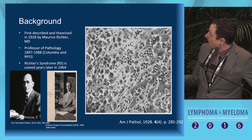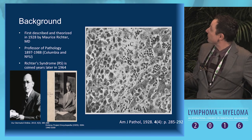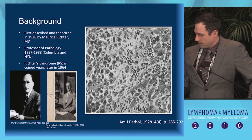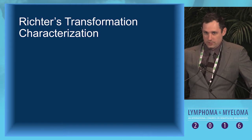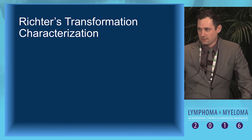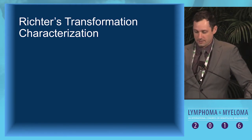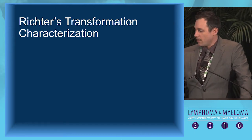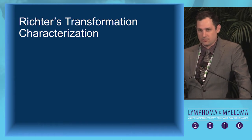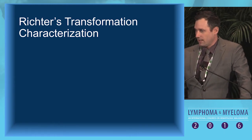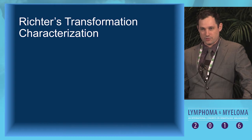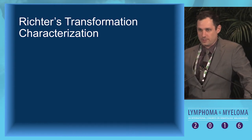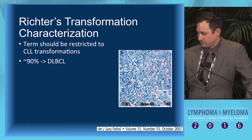You can see sheets of large atypical cells admixed with smaller CLL-like cells. The term Richter's syndrome really should be restricted to CLL when it transforms. While follicular lymphoma and marginal zone lymphomas can also transform, CLL when it transforms does seem to have a truly distinct biological difference in terms of its response rates to induction chemotherapy, so we should restrict the term to CLL transformations.